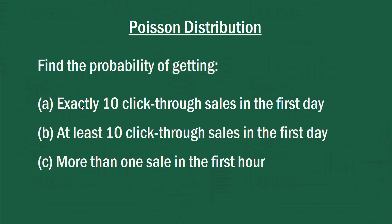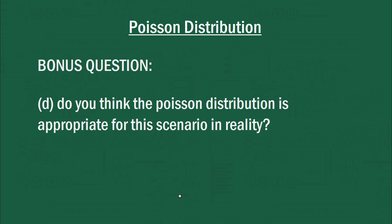We're after the probability of getting exactly 10 click-through sales in the first day, at least 10 click-through sales in the first day, and then more than one sale in the first hour. So see how you go with those. And I'm also going to give you a bonus question. Do you think the poisson distribution is actually appropriate for this scenario in reality? So hopefully you can think about those assumptions and figure out whether they would hold in this case.